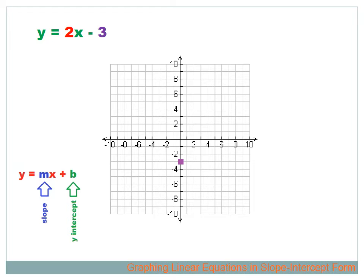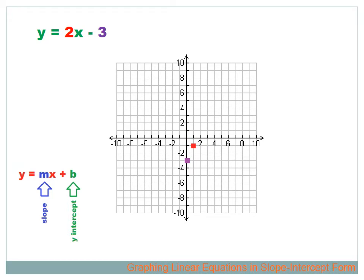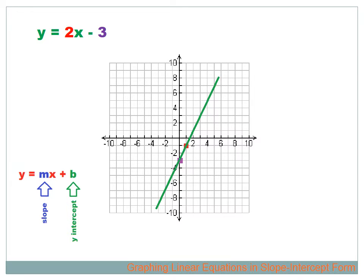We've got one point, and we've got more information — the slope is 2, which means rise over run, like positive 2 over positive 1. Starting at the y-intercept, the purple dot, it rises positive 2 and runs positive 1, giving us another point — the red dot. Now we've got two points, and all we have to do is draw a line through them. That's the line representing y equals 2x minus 3.